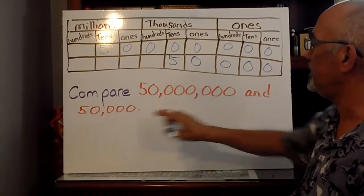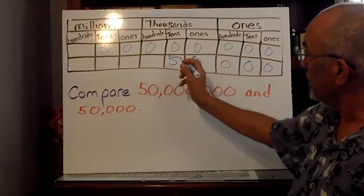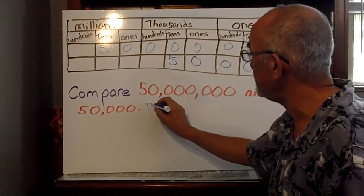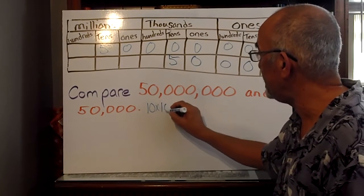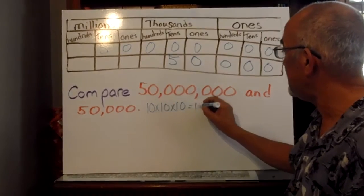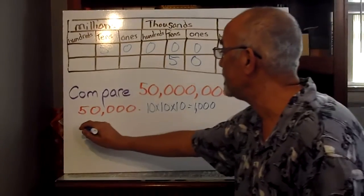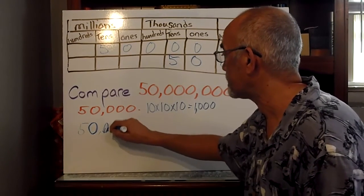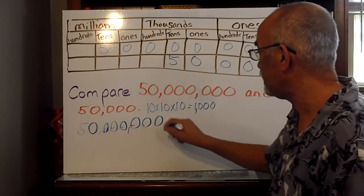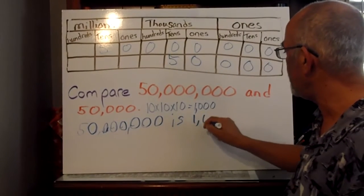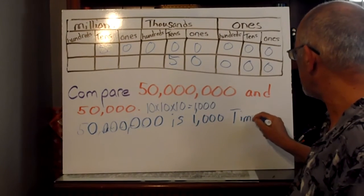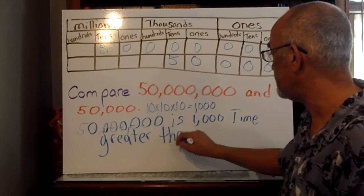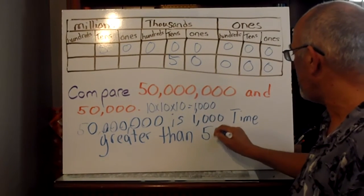So, compare fifty million and fifty thousand. To compare this, we say one, two, three. Three, which would be ten, times ten, times ten. One thousand. So, fifty million is one thousand times greater than fifty thousand.